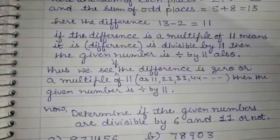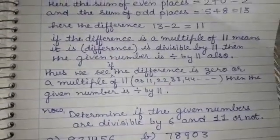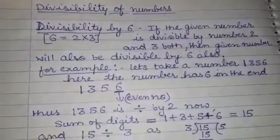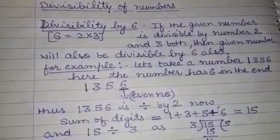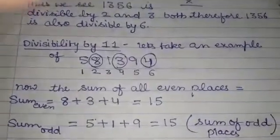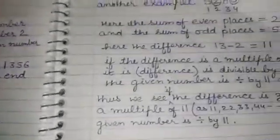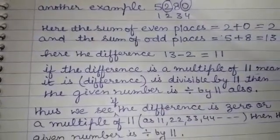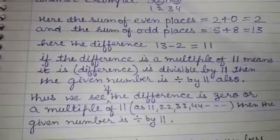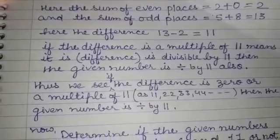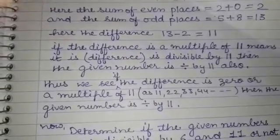From both examples we conclude that if the difference is 0 or a multiple of 11, then the given number is always divisible by 11. So that is all for divisibility by 11. To recap: divisibility by 6 — if the given number is divisible by both 2 and 3, it is divisible by 6. Divisibility by 11 — find the sum of even place digits and sum of odd place digits; if their difference is 0 or a multiple of 11, the number is divisible by 11.